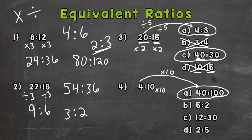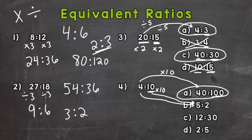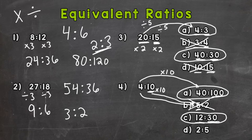For B — 5 to 2. I can't get 4 to equal 5 using multiplication or division cleanly. I could do 10 divided by 2 to get that 5, but just like number 3, order matters — I can't take that 10 divided by 2 and use it as the first number. So B does not work because order matters. For C — 12 to 30. 4 times 3 gives me 12, and 10 times 3 gives me 30. I did the same thing to both the 4 and the 10, so C is an equivalent ratio.